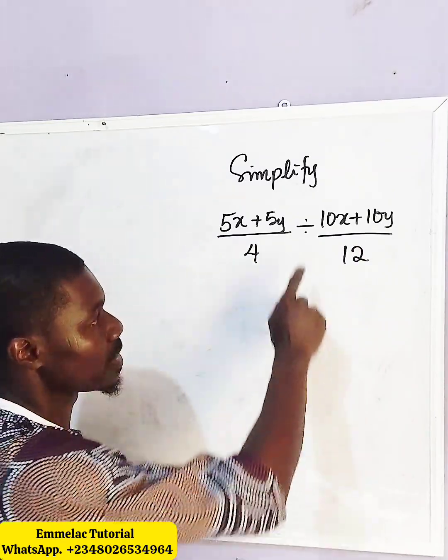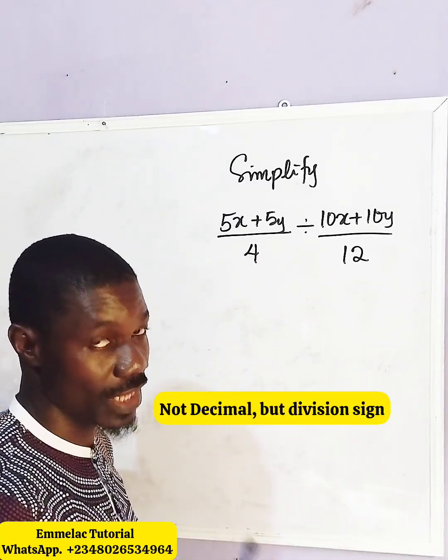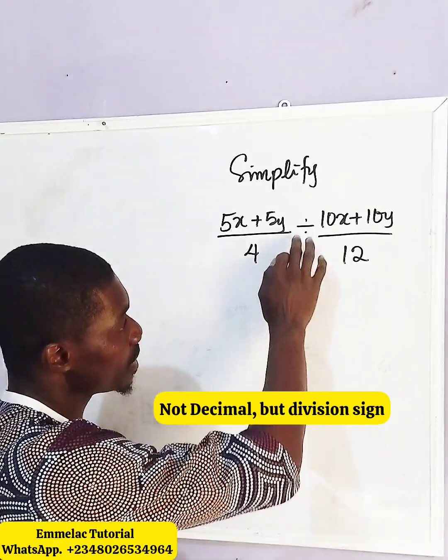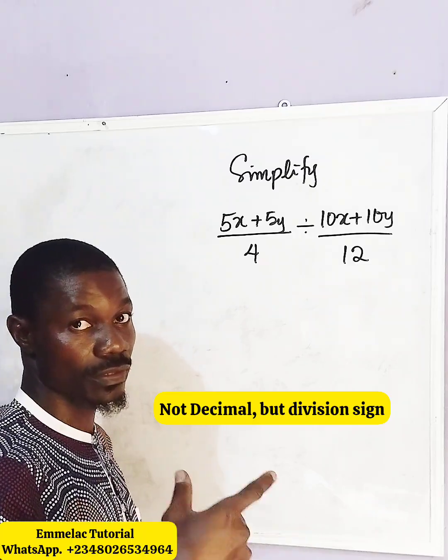Now the first thing, let us see how to change the division sign to multiplication. That's always the first step, especially when you see a division sign. Try to reverse it to multiplication.